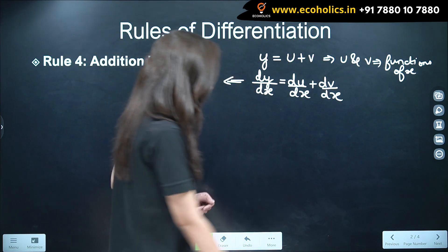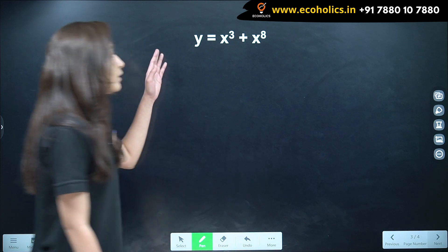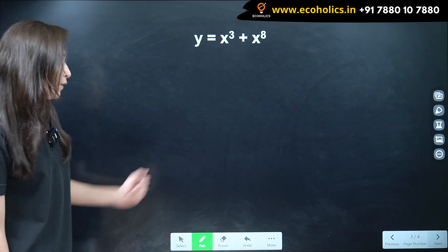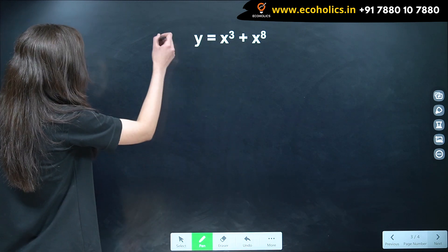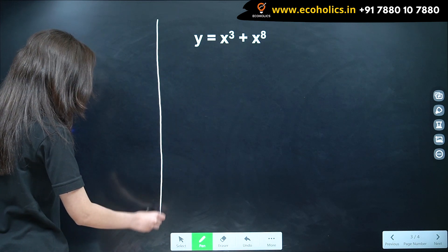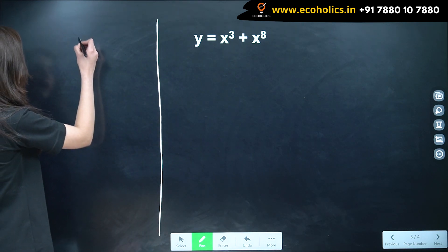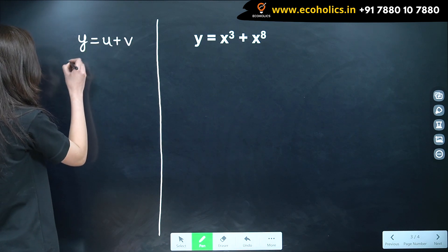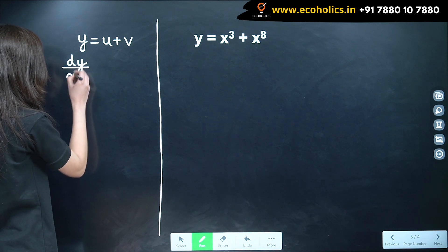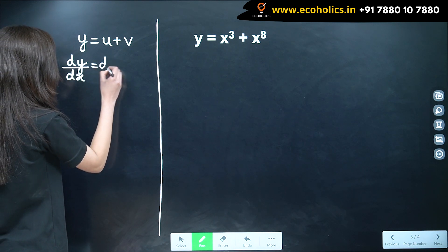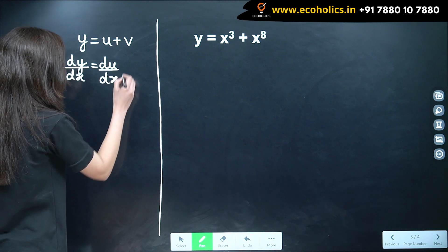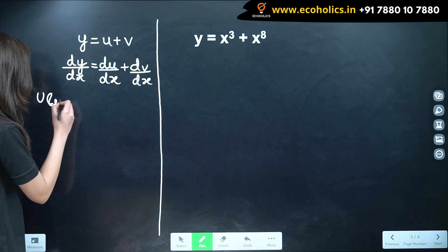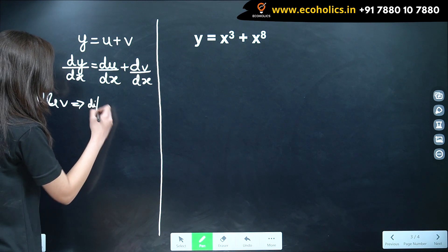Using this rule, let's look at a few examples. In this case, we have y is equal to x cubed plus x raised to 8, and we need to find the derivative. We have seen that when y is equal to u plus v, then dy by dx is equal to du by dx plus dv by dx, where u and v are differentiable functions of x.